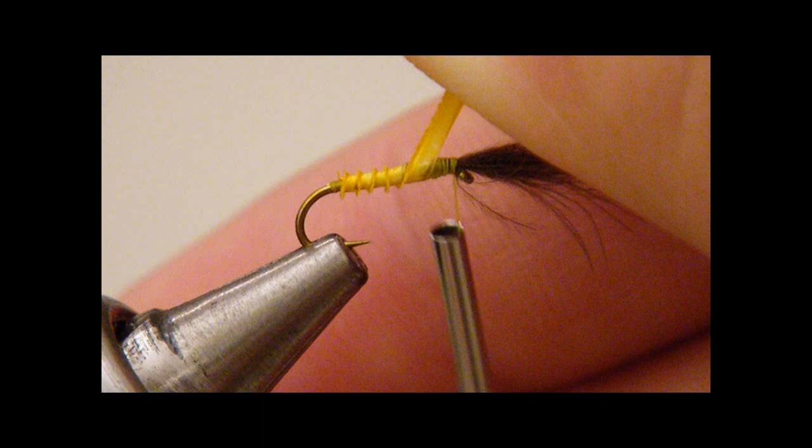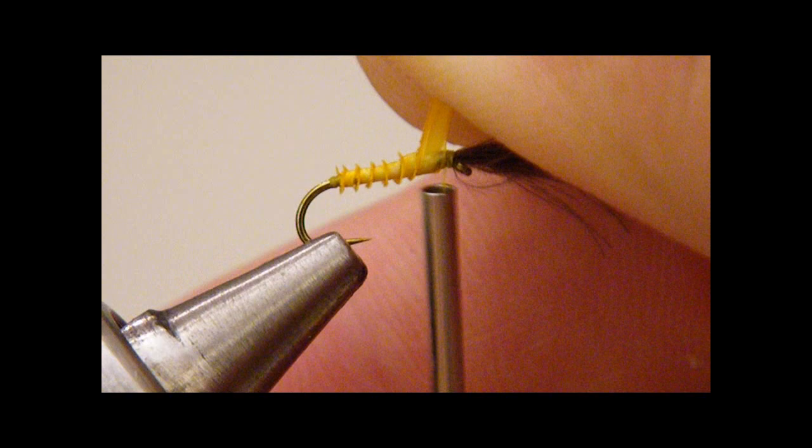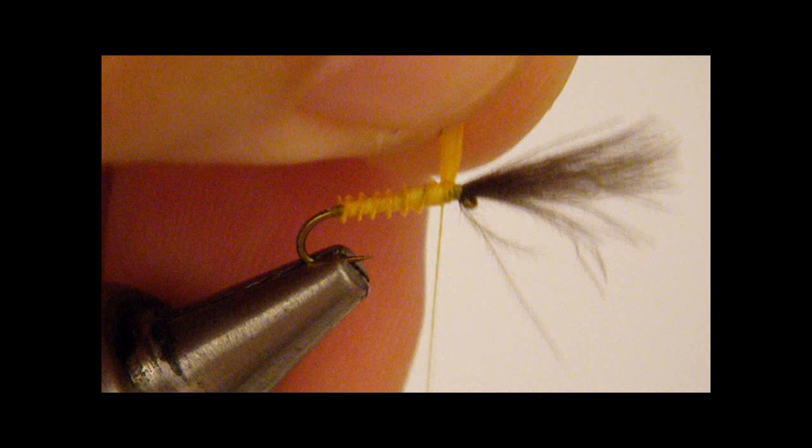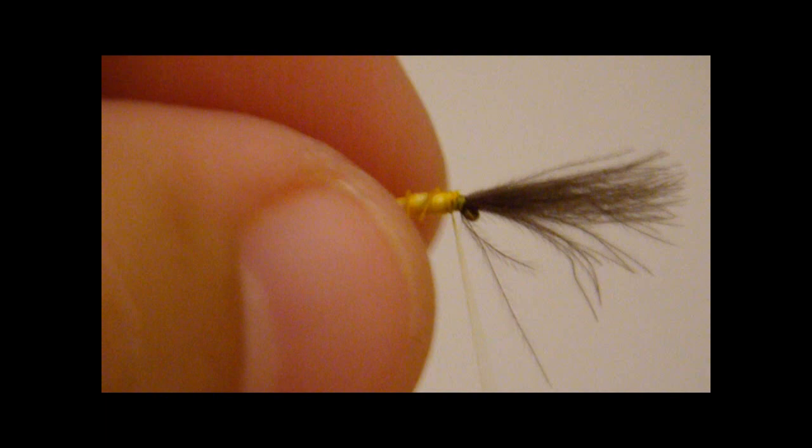This time of year, believe it or not, there's still sulfurs on the water. And it's been hard to believe. It's been an amazing year for sulfurs, for the sulfur hatch. And so, they do know what one looks like now. And so we're having to show them these cripple patterns.